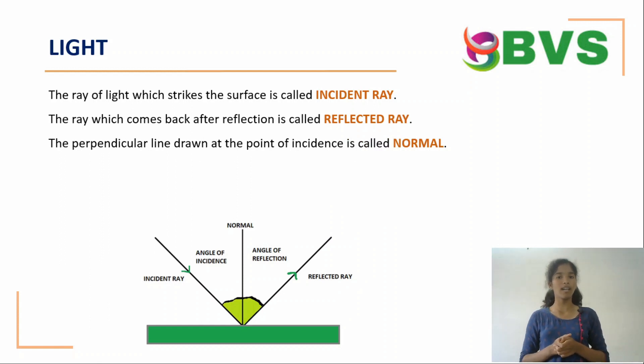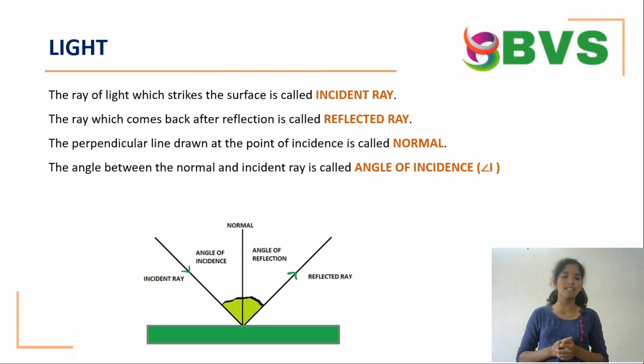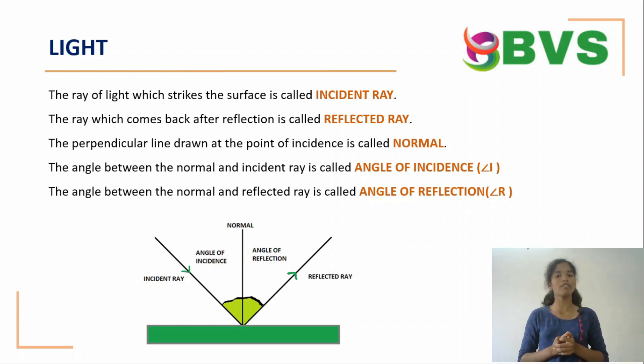The perpendicular line drawn at the point of incidence is called normal. The angle between the normal and incident ray is called angle of incidence. The angle between the normal and reflected ray is called angle of reflection.